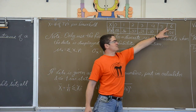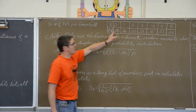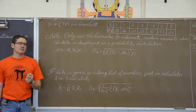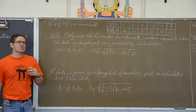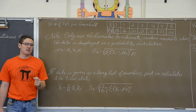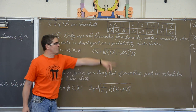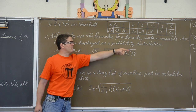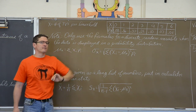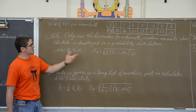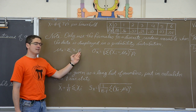I have a list of outcomes and a list of probabilities, and for this to be valid those do need to add up to one — and indeed they will. So here I have a PDF, a nicely organized set of data representing a discrete random variable. Note: only use the formulas for a discrete random variable when the data is displayed in a probability distribution. These are the formulas for finding the mean and the standard deviation of a discrete random variable. The mean of x — the mean number of TVs in a household — is found by taking the sum of x-sub-i times p-sub-i.